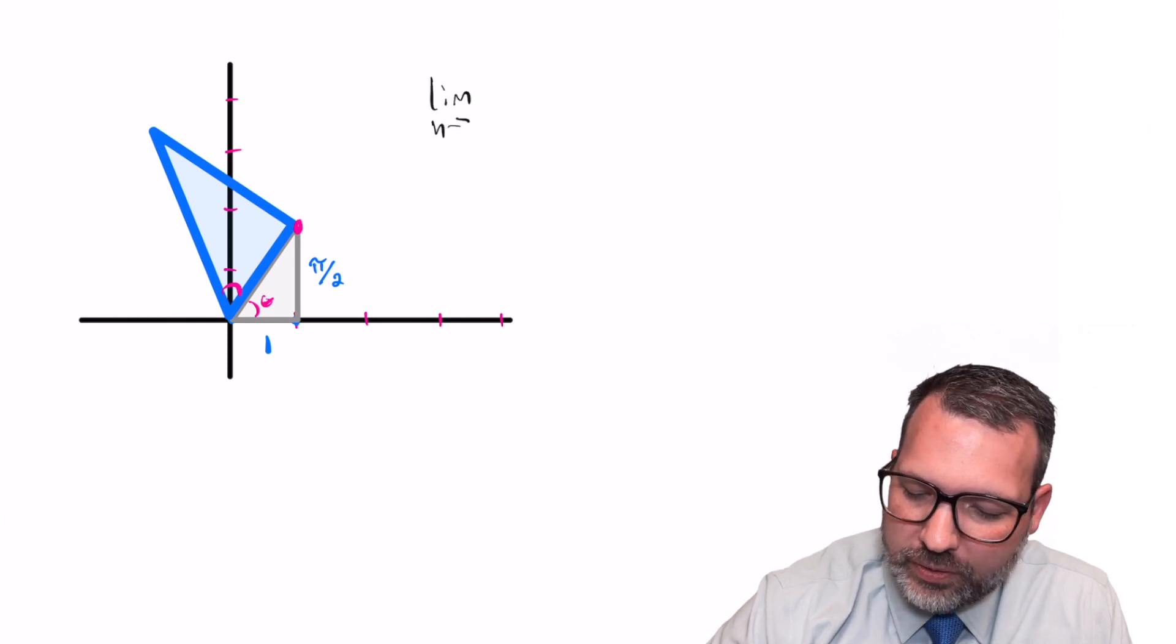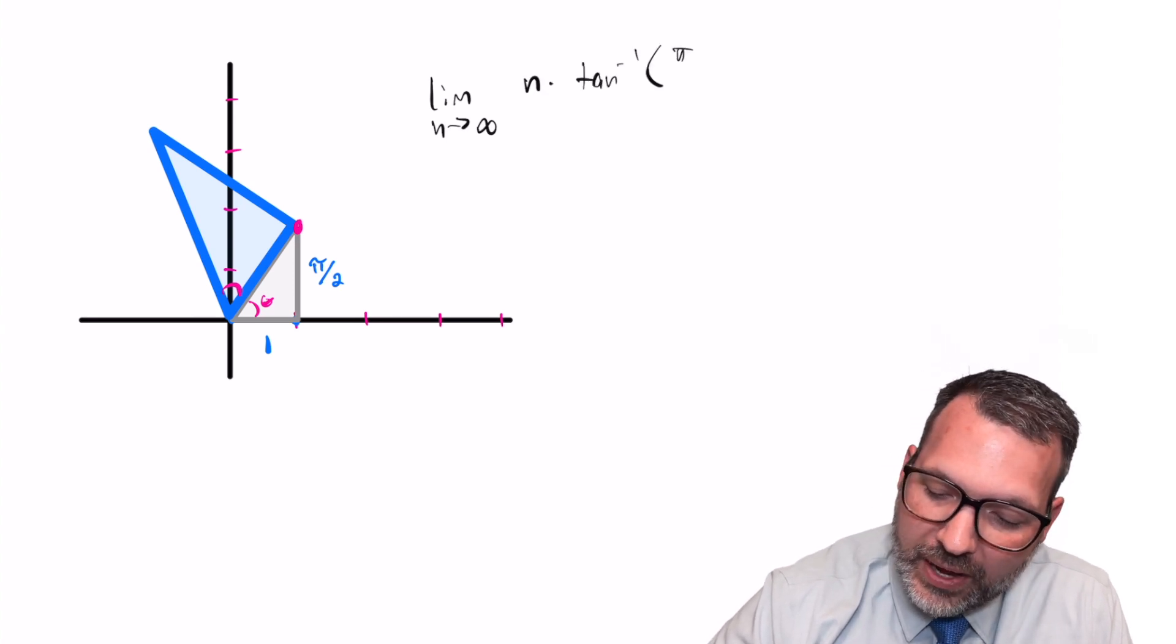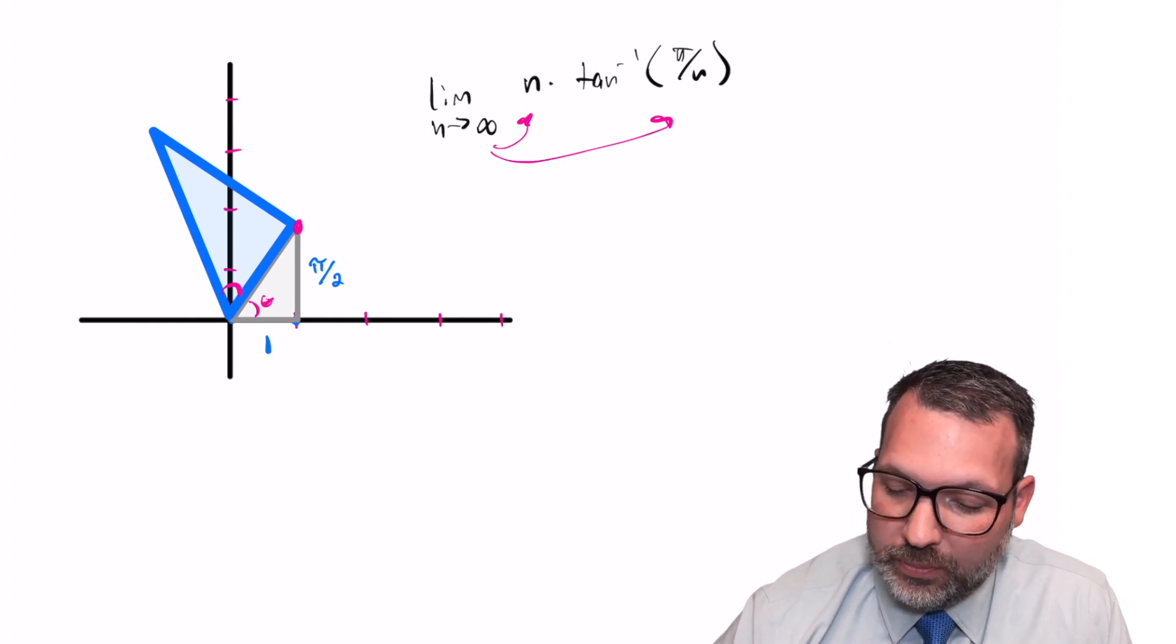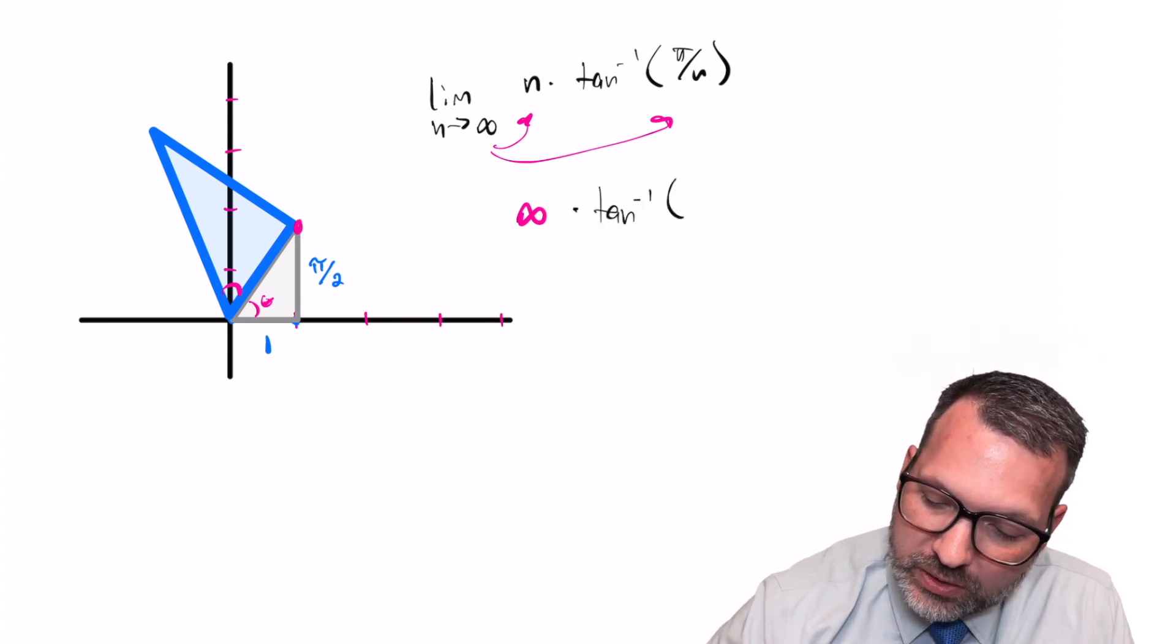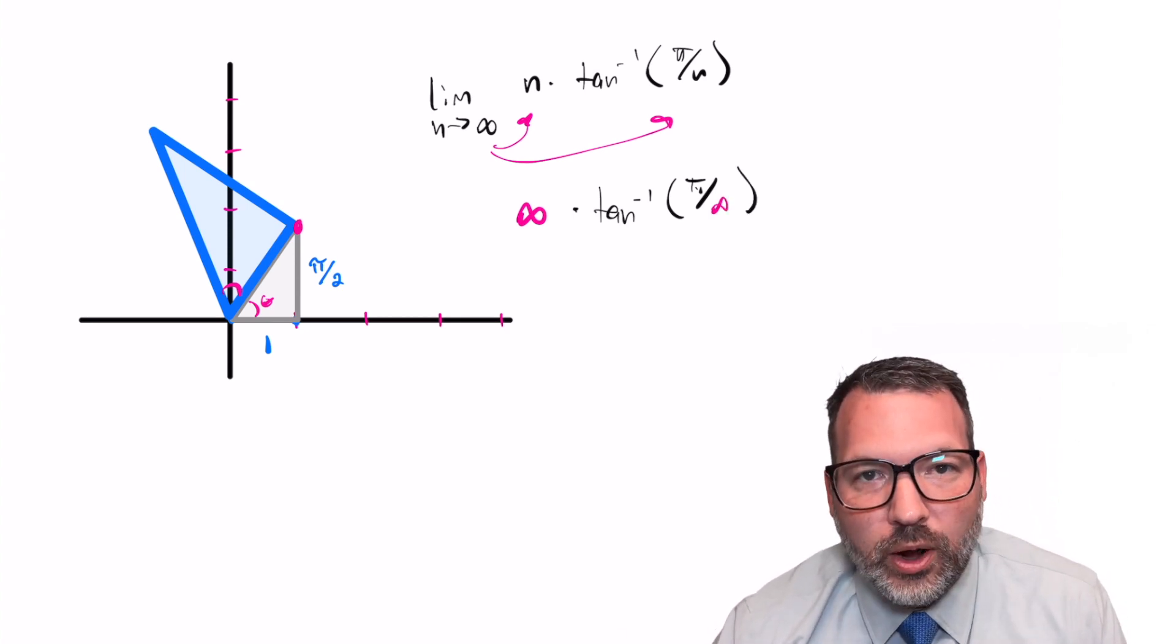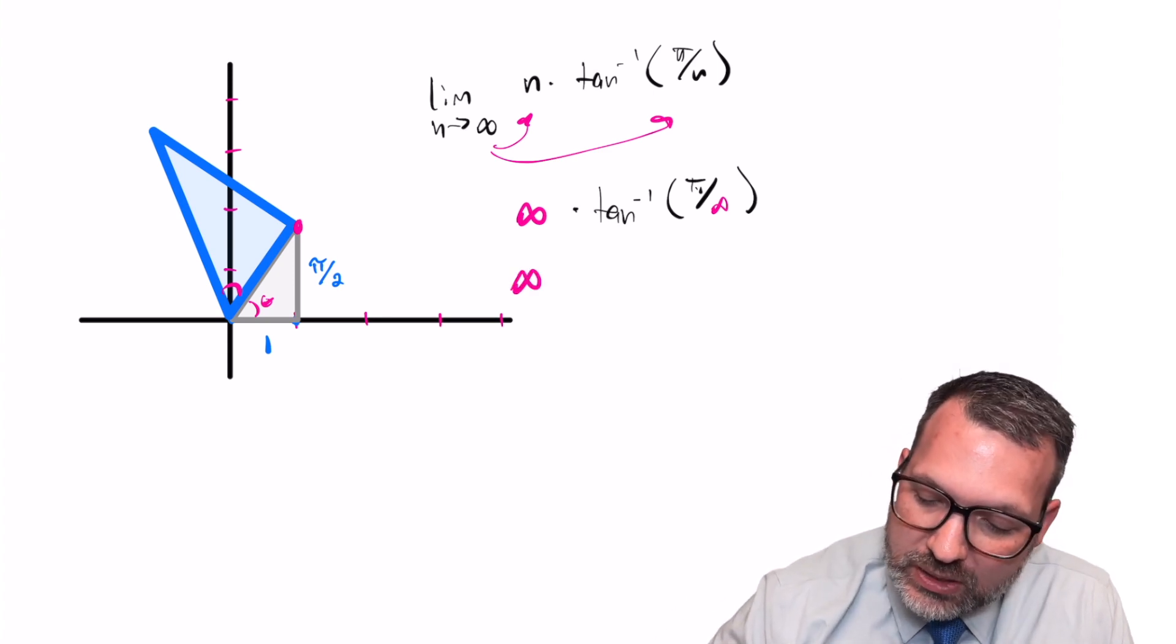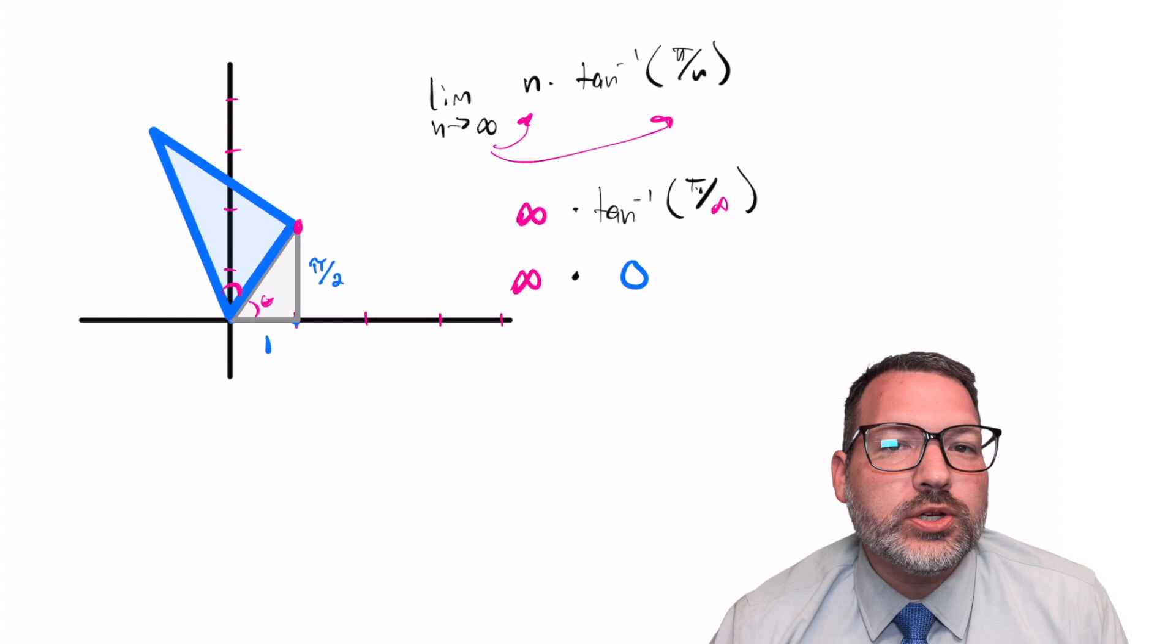In limit notation, we can write about it this way. What we're interested in is the limit as n gets infinitely large, n times the inverse tangent of π over n, trying to show that this does converge to some particular value. If we attempted to literally just plug in infinity right now, we would end up with a problem. The n, of course, would just be infinity, some infinitely large number. But then the inverse tangent portion, well, as we divide π up into smaller and smaller bits, we're going to get something that approaches zero. If you divide π up into a million pieces, you're going to have one millionth of π. If you divide π up into a billion pieces, it's even smaller. So in fact, at some point, it's going to be indistinguishable from zero, and the inverse tangent of zero is zero itself. So we end up with what we call an indeterminate form.